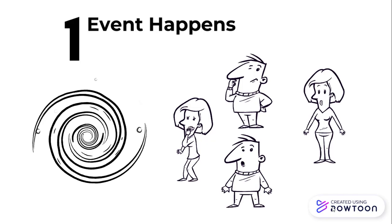The first step in the information cycle is that an event happens. When an event first occurs, the individuals informed about the event are usually the ones who experienced it firsthand.